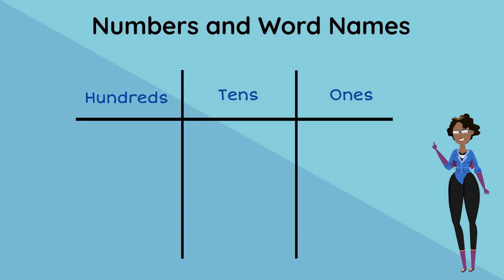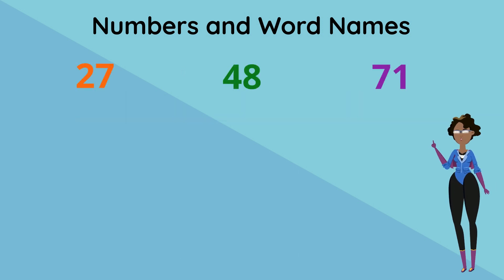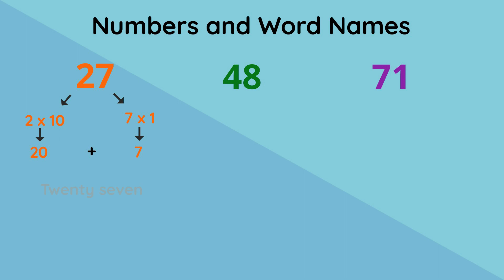Let's go through an example. Can you tell me what the word names for these numbers would be? The first number has no figure under the hundred column, a 2 in the tens column, and a 7 in the ones column. That means the 2 in the tens column is 2 by 10, which is 20, and the 7 in the ones column is 7 by 1, which is 7. 20 plus 7, that's 27.